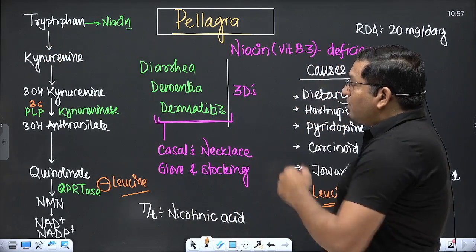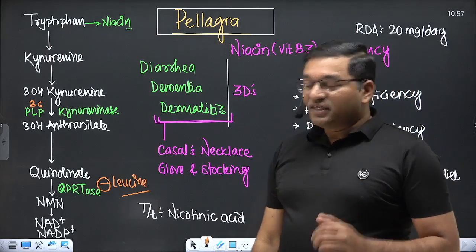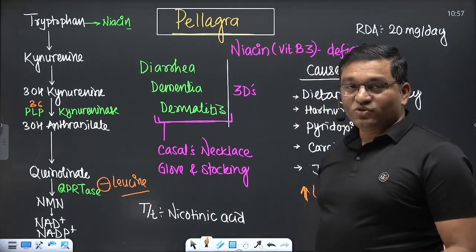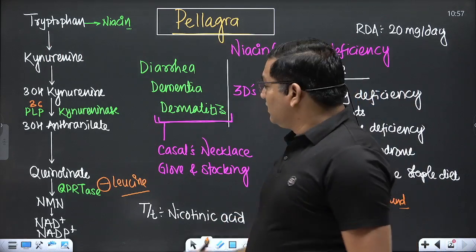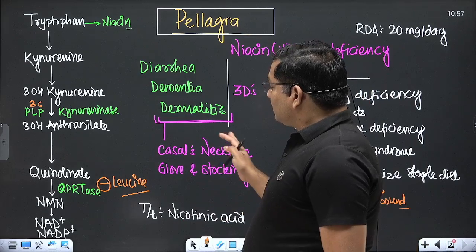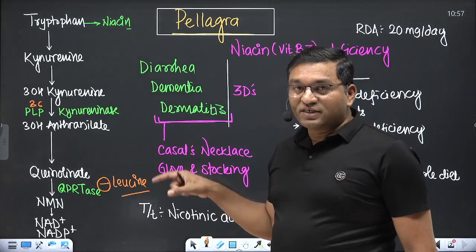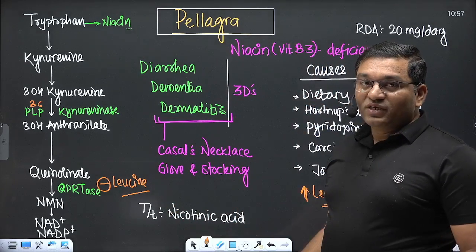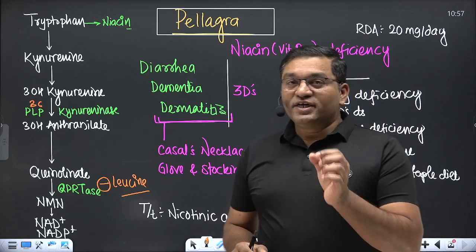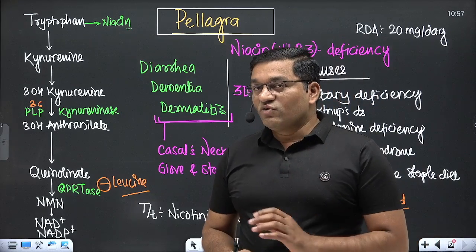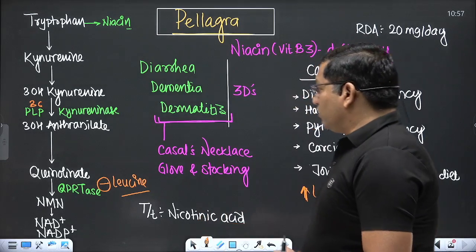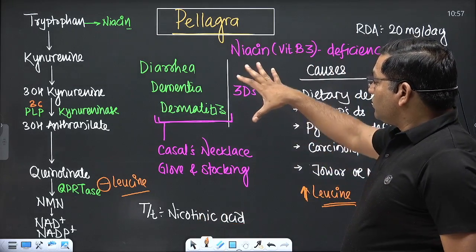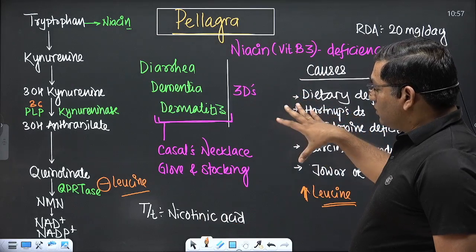For treatment of pellagra, the treatment is nicotinic acid. Nicotinic acid and nicotinamide are both covered under the general name niacin. It is important to note that niacin is different from nicotine, which is found in tobacco.